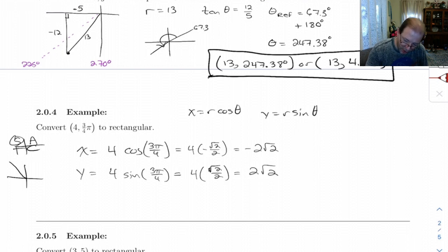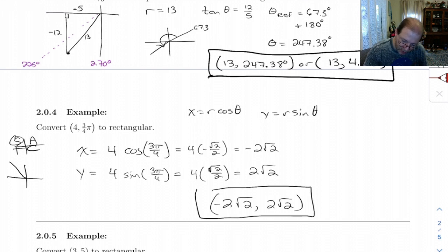So we get that for x and y. I guess I should write it as a point. Since it's asking us for coordinates. So that's the Cartesian coordinates of that point.